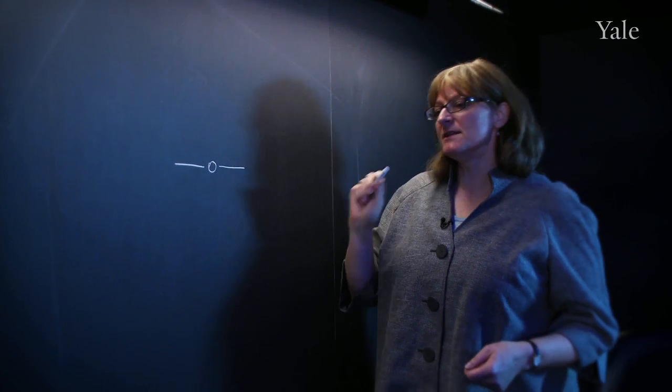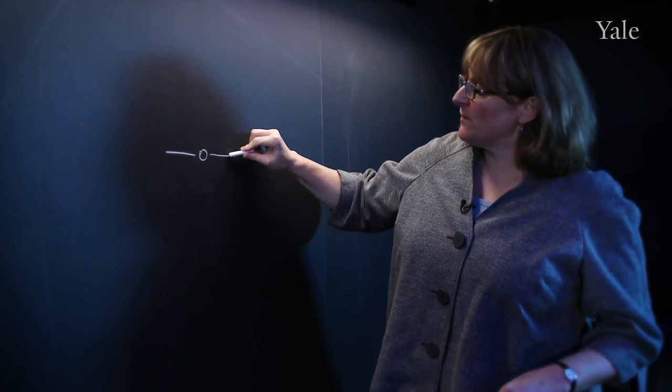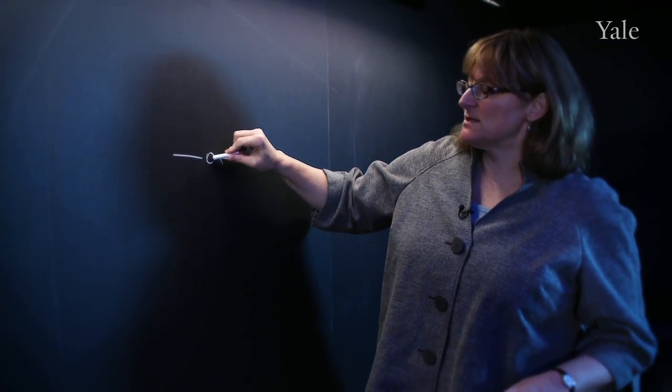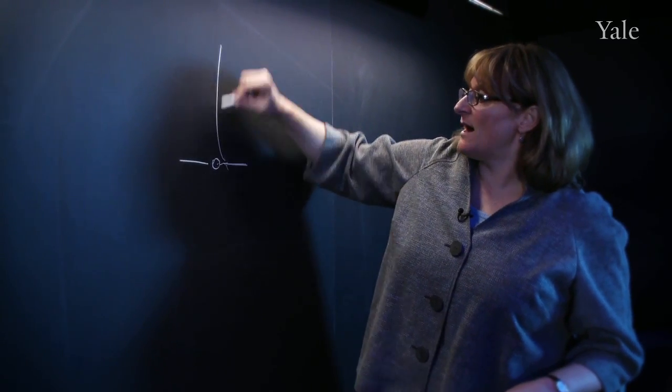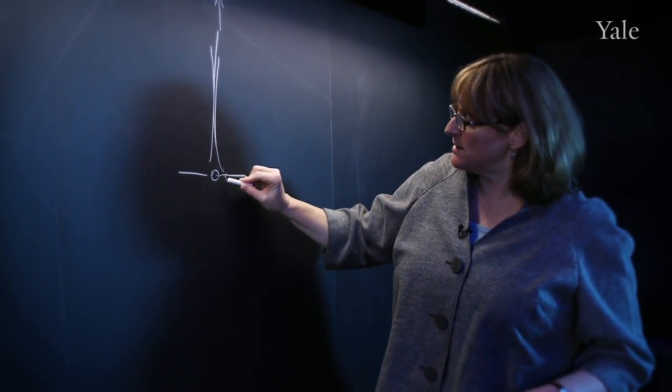And what happens in the supermassive black hole case, which is really important for Fermi, is that matter flowing in, some of it goes into the black hole, but some of it shoots out in energetic jets of particles that are flowing out in both directions.